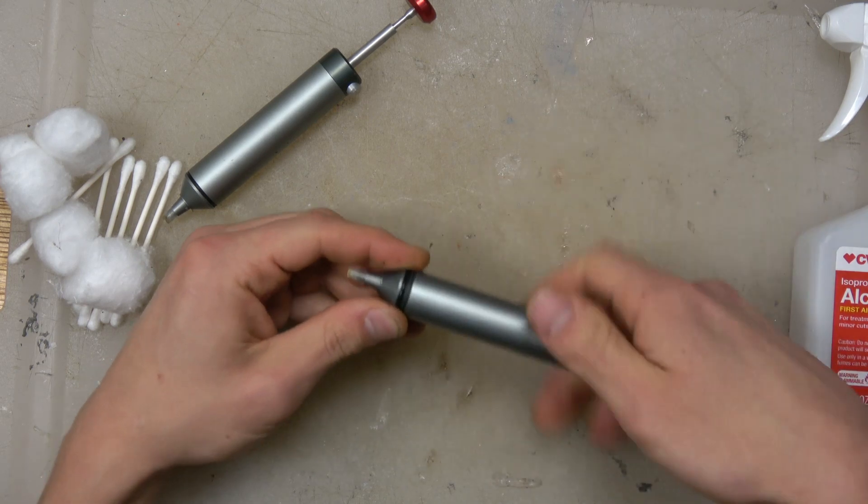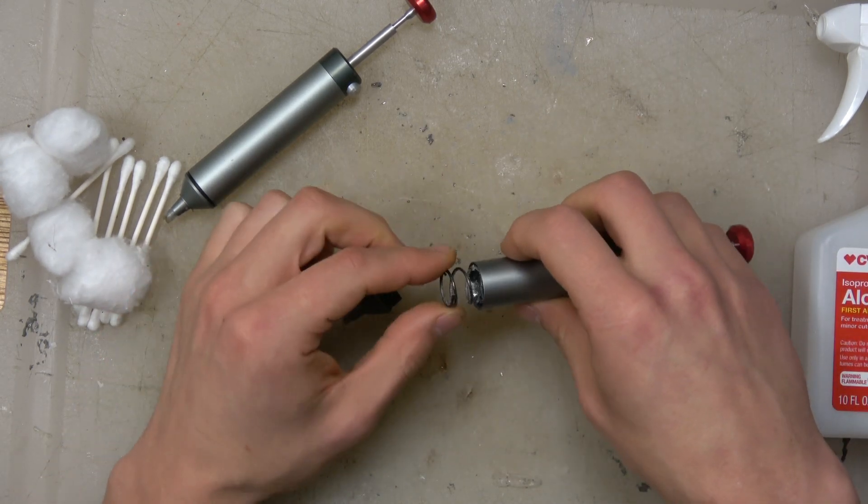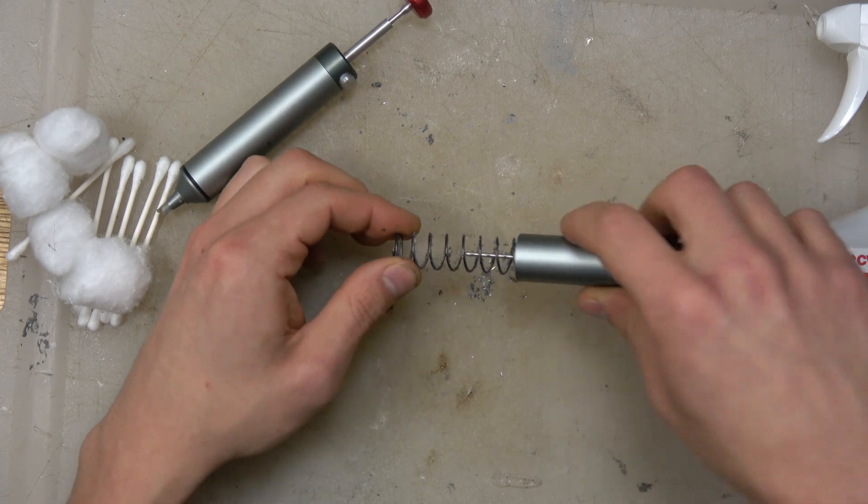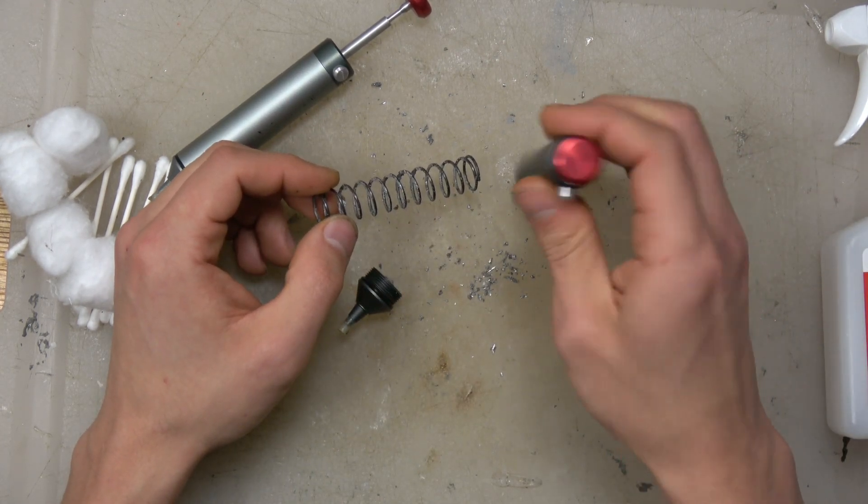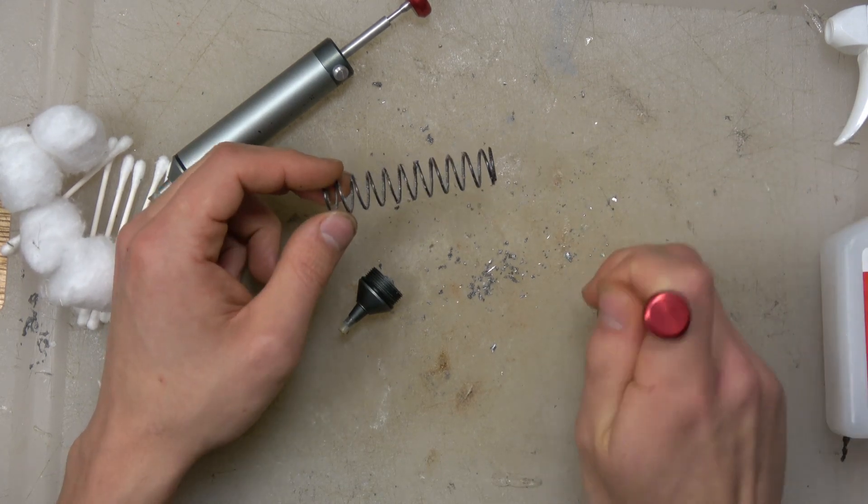So cleaning it, you just pretty much take it apart. It's separated into three different categories. One being the chamber, the second being the spring, and the third being the plunger, which is what we'll be applying the lithium grease to later.